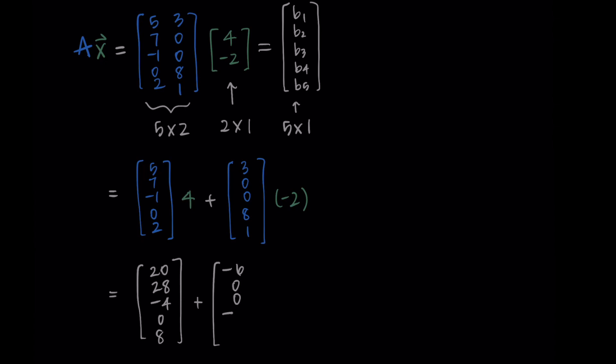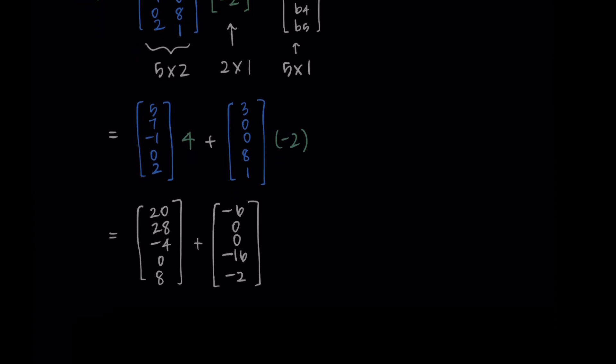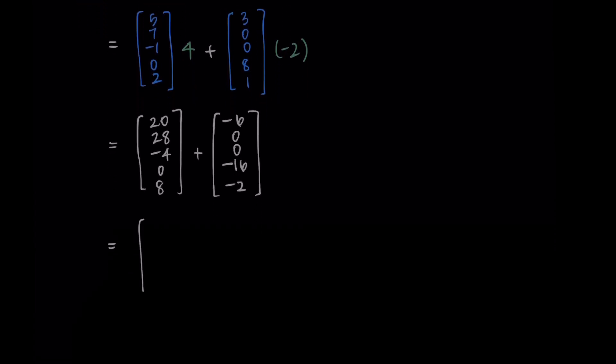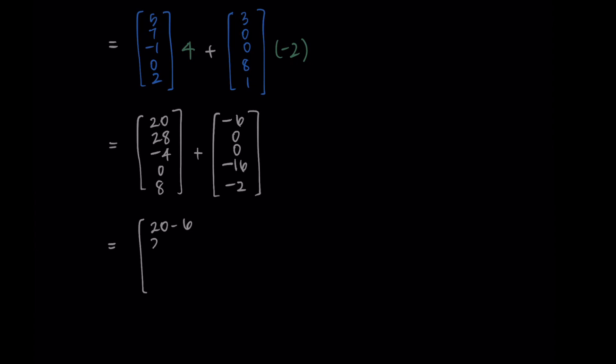Then for the second I'm going to do the column multiplied by negative 2. So I just get negative 6, 0, 0, negative 16, and negative 2. Now I just need to add the vectors together so I add the components. I'm getting 20 minus 6, 28 plus 0, negative 4 plus 0, 0 minus 16, and 8 minus 2.